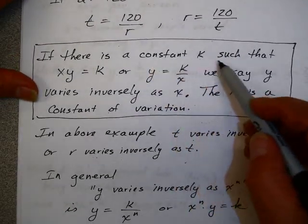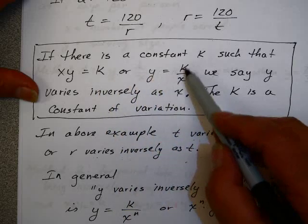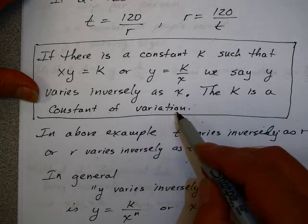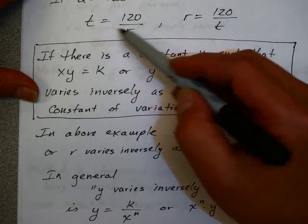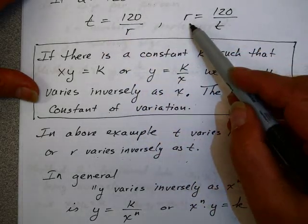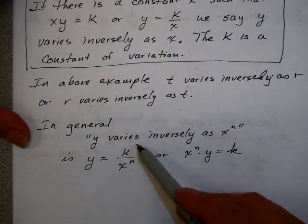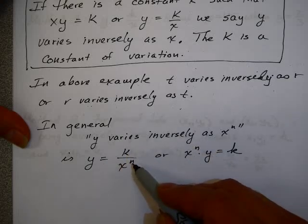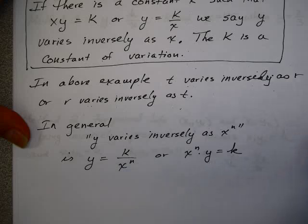If there is a constant k such that x times y equals k, or equivalently y equals k over x, we say y varies inversely as x. The k is called a constant of variation. In the driving example, t varies inversely as r, or r varies inversely as t. In general, y varies inversely as x means y equals k over x to the n, where another way to write this is x to the n times y equals k.